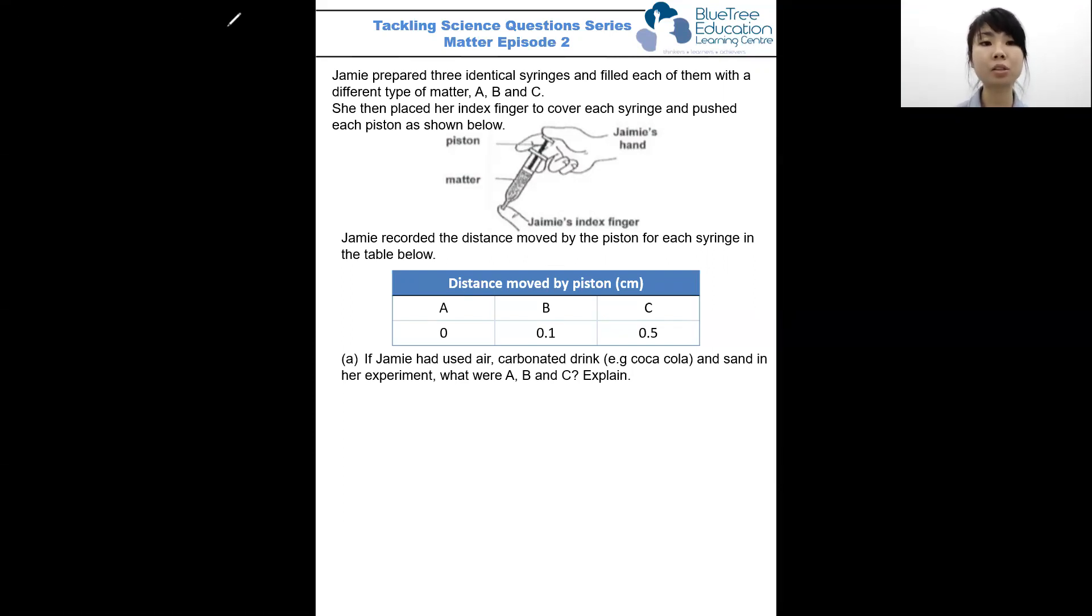So now let's first look at the question together. Jamie prepared three identical syringes and filled them with different types of methods, A, B and C respectively. She placed an index finger to cover the mouth of the syringe and pushed the piston as shown in the diagram. She recorded the distance moved by the piston for each syringe in the table, and we see that for A, the piston moved by 0 cm, it doesn't move at all. For B it moved really little by 0.1 cm, and for C it moved the most out of all three syringes, it moved by 0.5 cm.